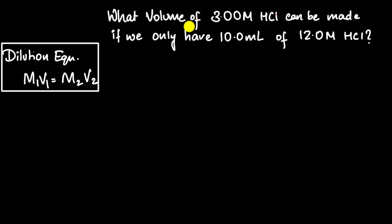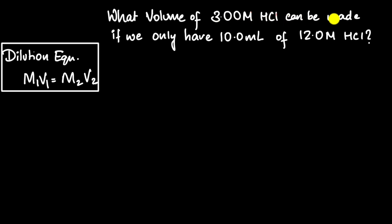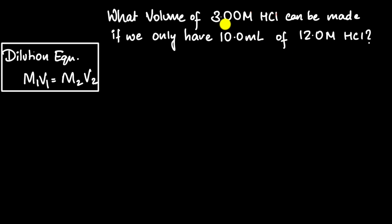Let's try another problem: what volume of 3 molar HCl can be made if you only have 10 ml of 12 molar HCl? Pause and try it yourself. We have 10 ml of 12 molar HCl — the concentrated solution — and we want to convert it into a more dilute 3 molar HCl solution by adding water. The question is: what final volume do we need to reach 3 molar?